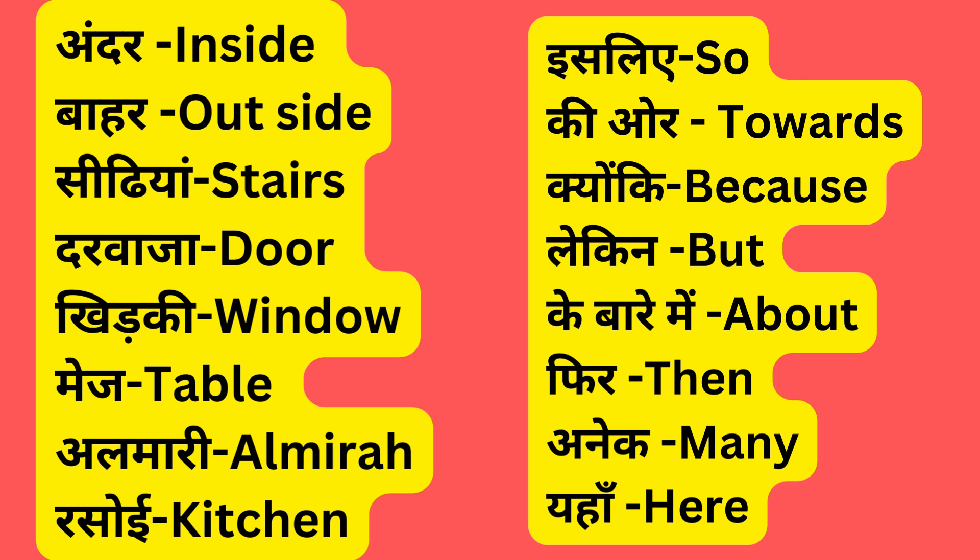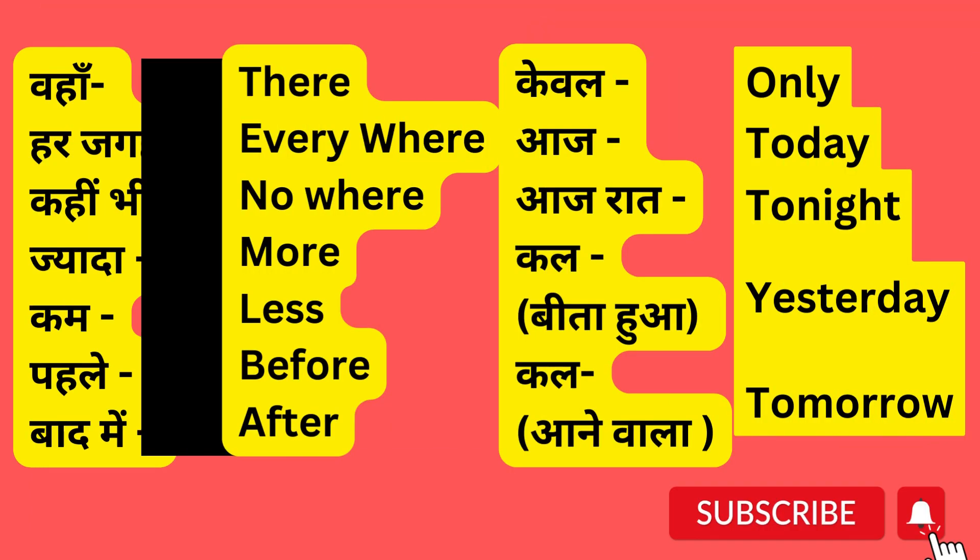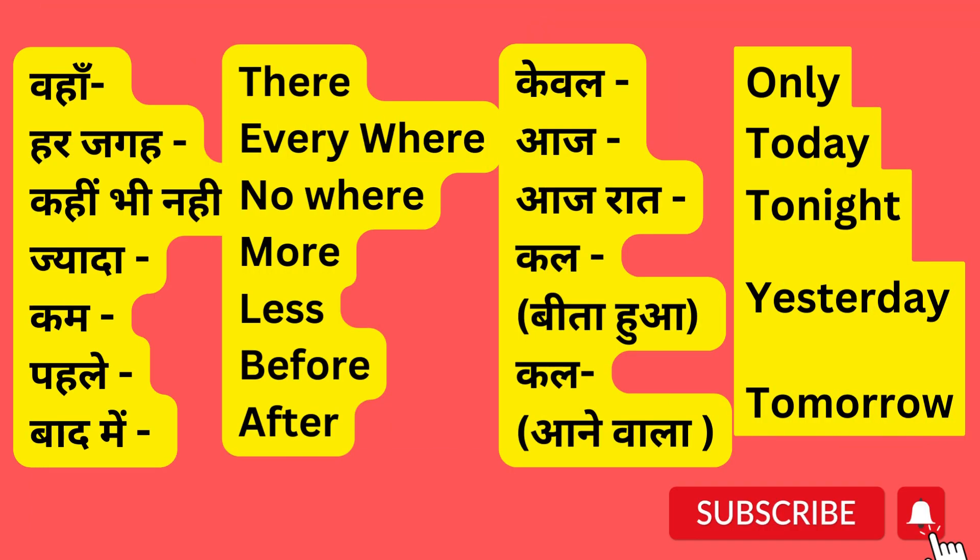Pheer — pheer ka hoga. Aneek — aneek ka hoga many. Yahan — here. Next — next. Wahaan — wahaan ka hoga there. Har jaga — har jaga ka English hoga everywhere. Where — where. Kahin bhi — anywhere.